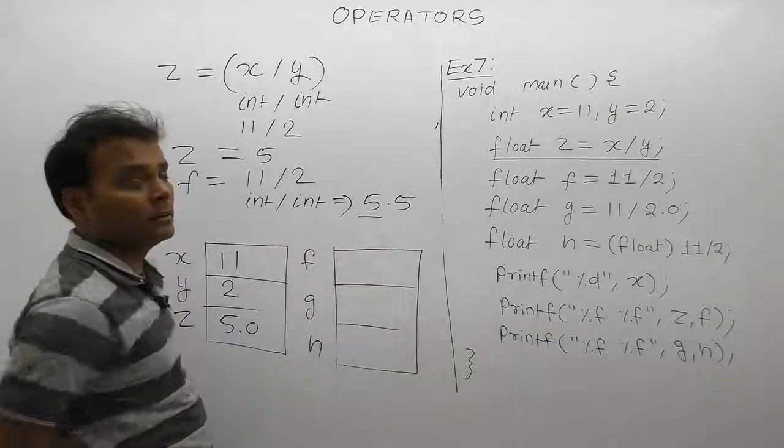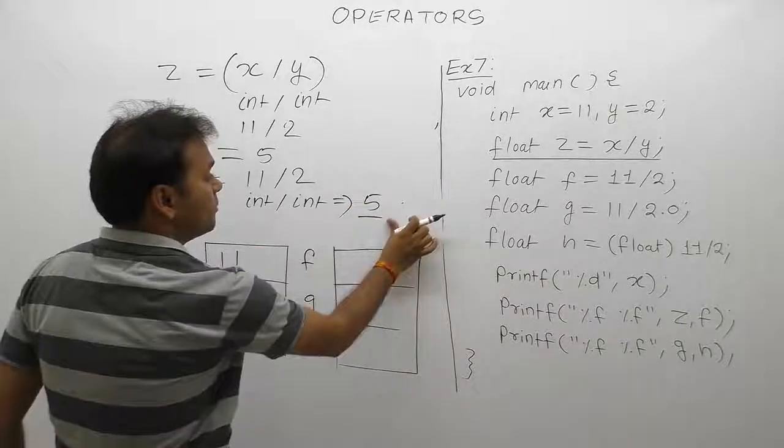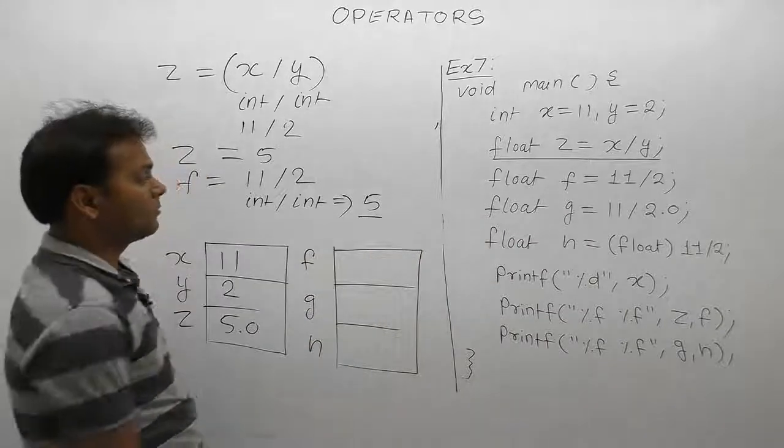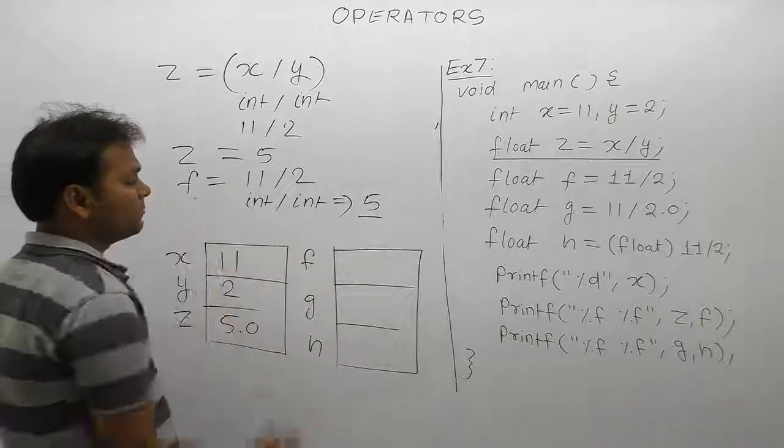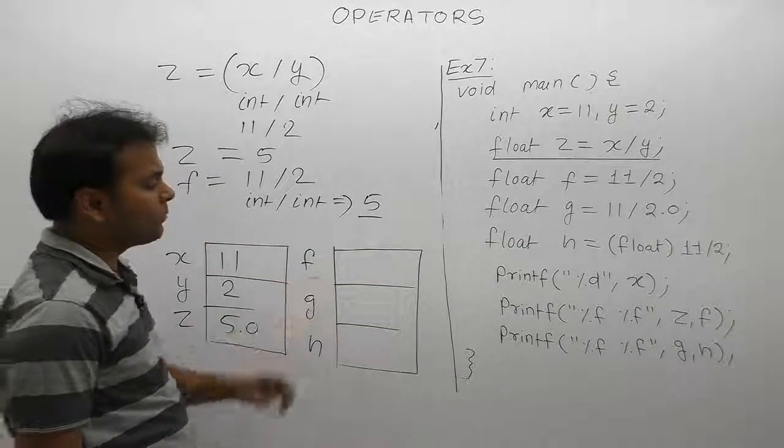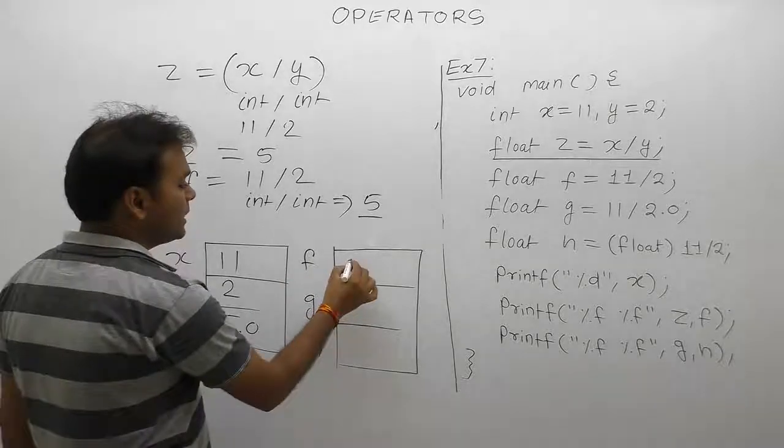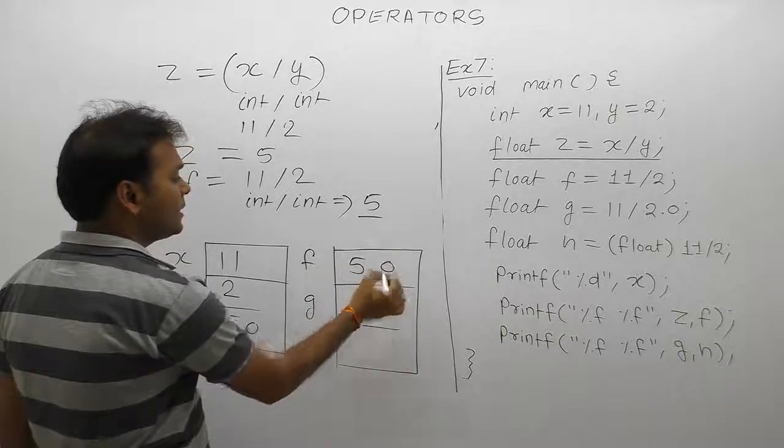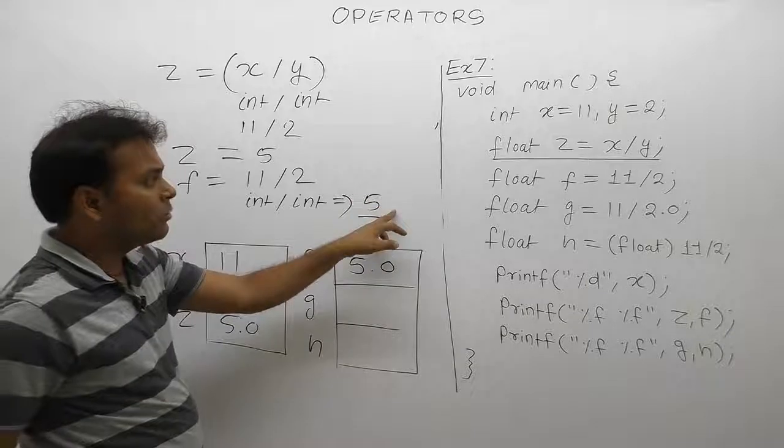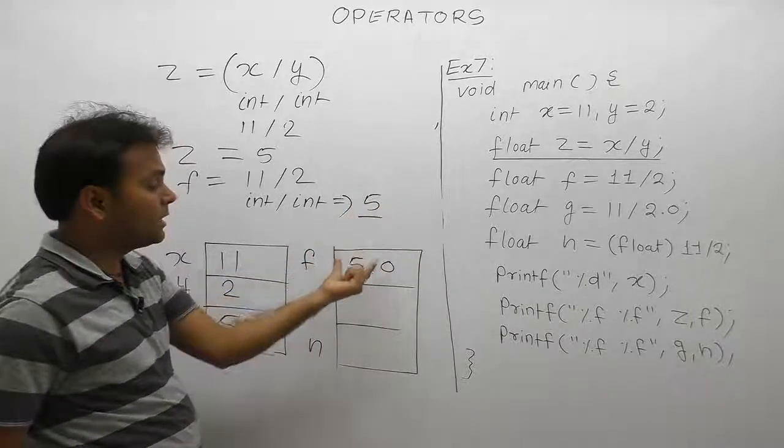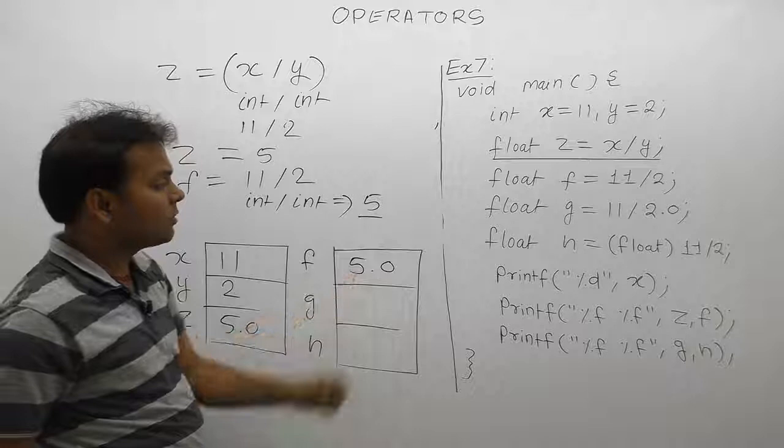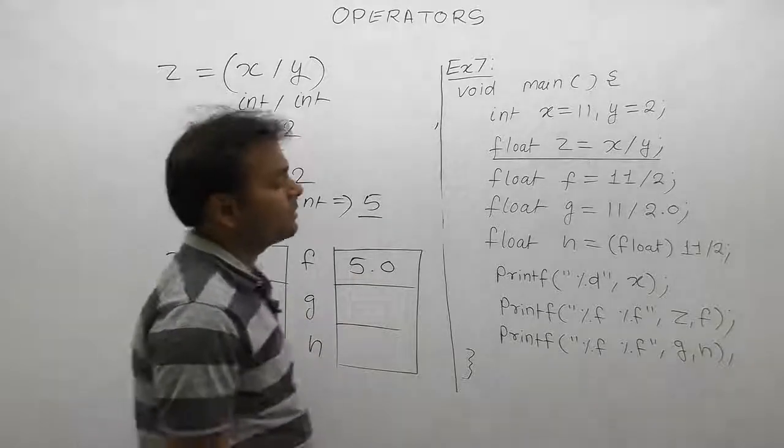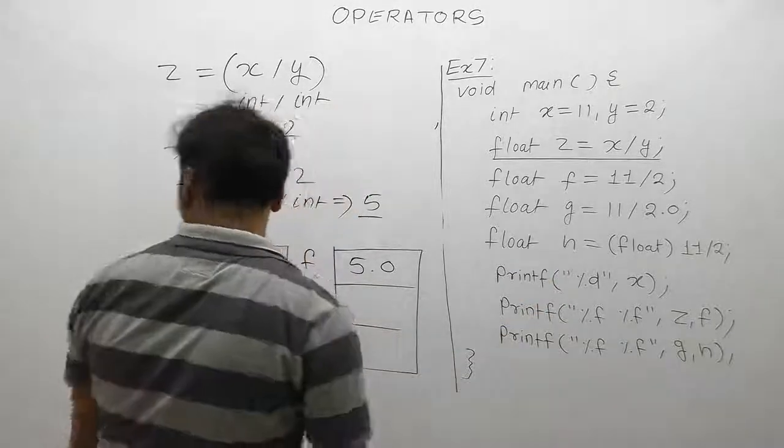For f, if the result 5.5 is produced but the operands are integer, only five is stored. If the result 5 is produced, it becomes 5.0 when stored in float. Next expression, third case.